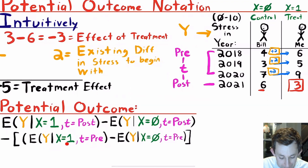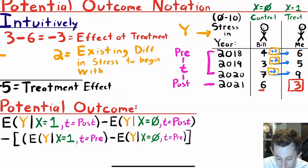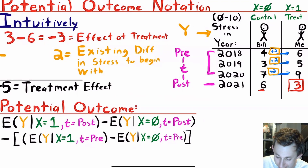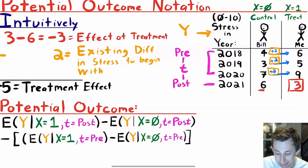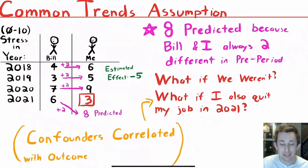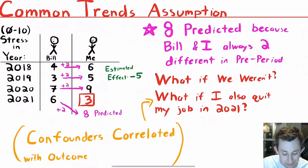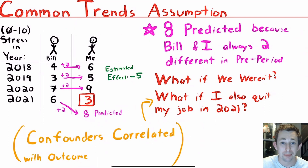Specifically, this is my average stress level in the pre-period — 2018 through 2020 — minus the average stress level of the control group (Bill's average) in 2018 through 2020. The difference between Bill and I in the post-period is minus three; the average stress difference between Bill and I in the pre-period was two, since each year showed a difference of two. So subtracting that two gives a treatment effect of minus five. Notice that this estimate assumed that since Bill and I were always two stress-level points apart in the pre-period, that difference would have continued into 2021 — that's how we got the counterfactual of eight. Instead, I was a three, and we take this difference to find my treatment effect of adopting a cat.